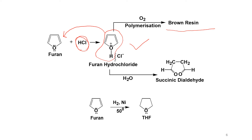In the presence of oxygen, polymerization occurs and furan is converted to a long-chain polymer, which is a brown resin — the same phenomenon we discussed for pyrrole. This is why we should avoid strong acids with furan, pyrrole, and also thiophene. Conversely, when furan hydrochloride reacts with water, it is converted back to succinic dialdehyde, which was used as the starting material in the fourth preparation method.